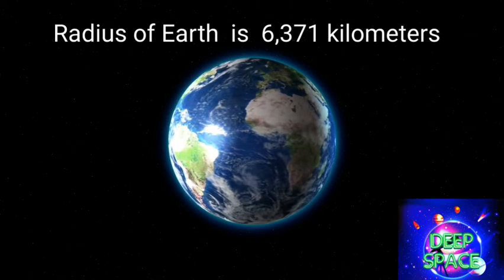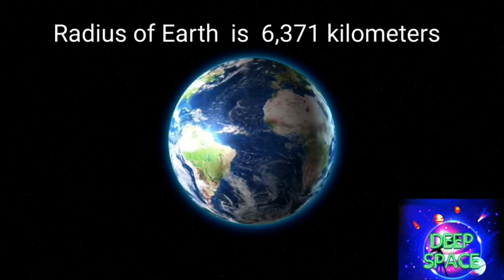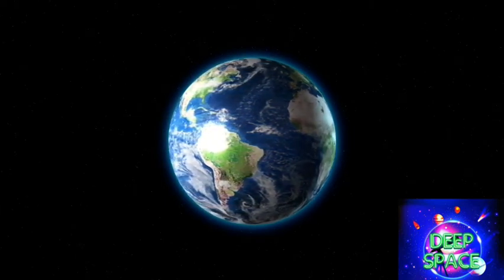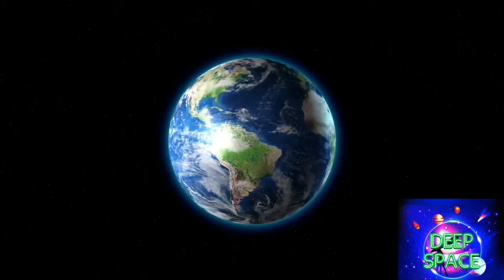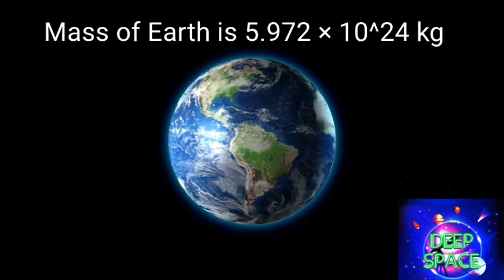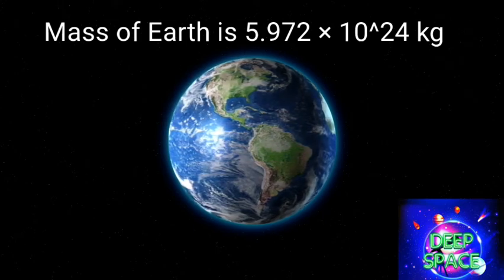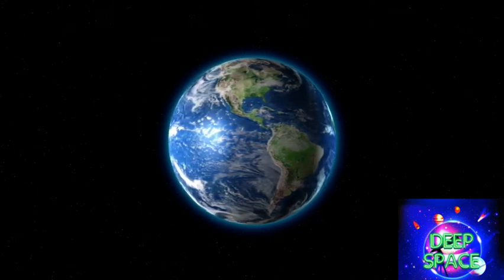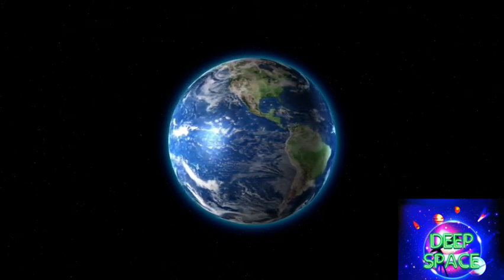Earth is almost, but not quite, a perfect sphere with a radius of 6,371 kilometers. The total surface area of Earth is about 510 million square kilometers. Earth is the biggest of the terrestrial planets and the fifth largest planet overall.